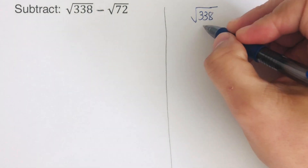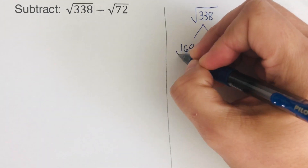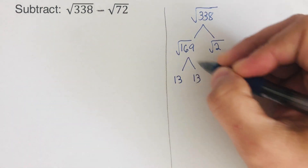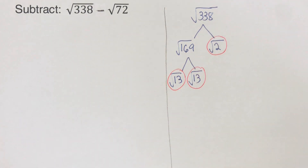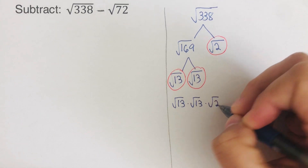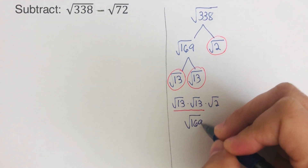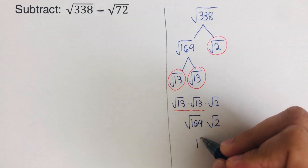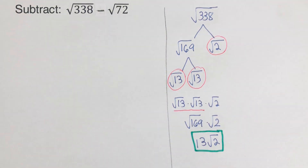We divide 338 by 2, since it ends in 8. So this gives us 169 times 2. Then 169 is divisible by 13, giving us 13 times 13 equals 169. The leftovers are 13, 13, and 2. So square root of 13 times square root of 13 times square root of 2. Pairing up: square root of 13 times square root of 13 is square root of 169, which equals 13. So we write 13 square root of 2 — the simplified version of square root of 338.